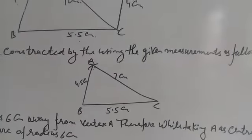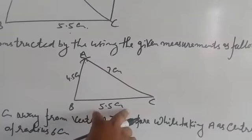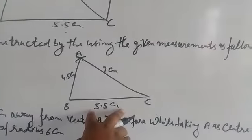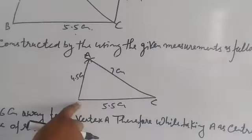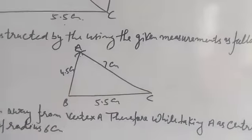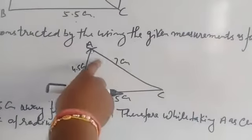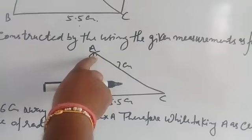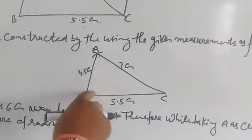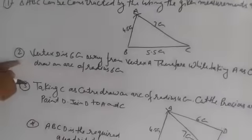First, draw BC = 5.5 cm. Take B as center and make an arc of 4.5 cm. Take C as center and make an arc of 7 cm. These arcs cut each other at point A. Join B to A and A to C.